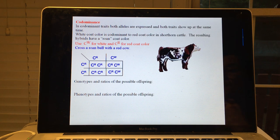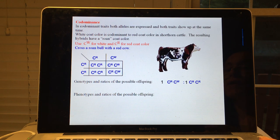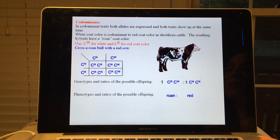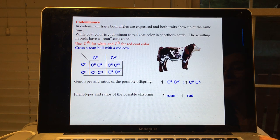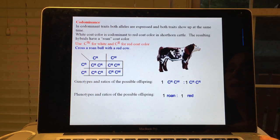So the genotypes and ratios of this offspring: you'd have C^R C^W to C^R C^R in a one-to-one ratio, and the phenotypic ratio would be roan to red in a one-to-one ratio. So with codominance and incomplete dominance, the genotypic ratios and phenotypic ratios are always the same as one another.